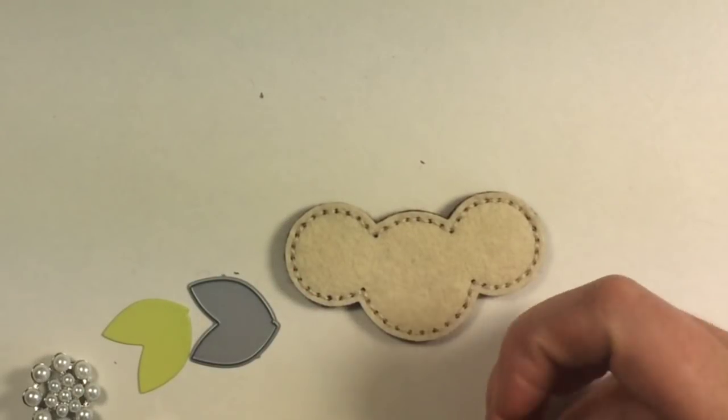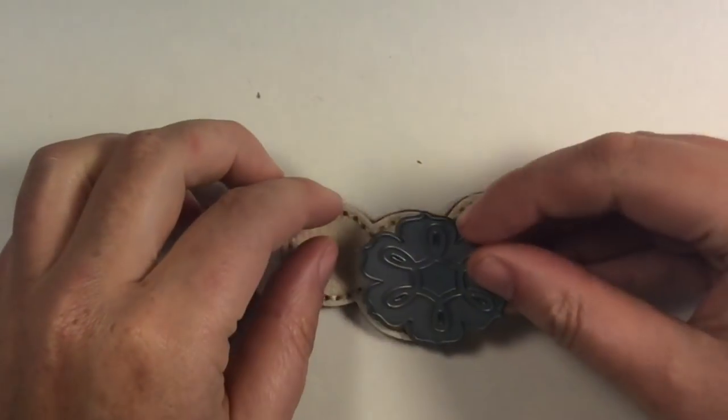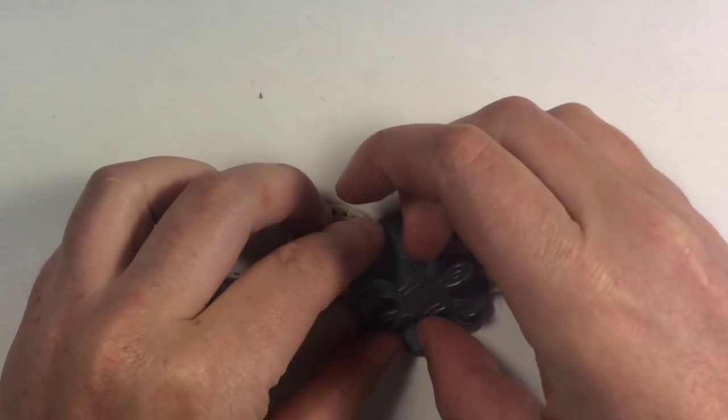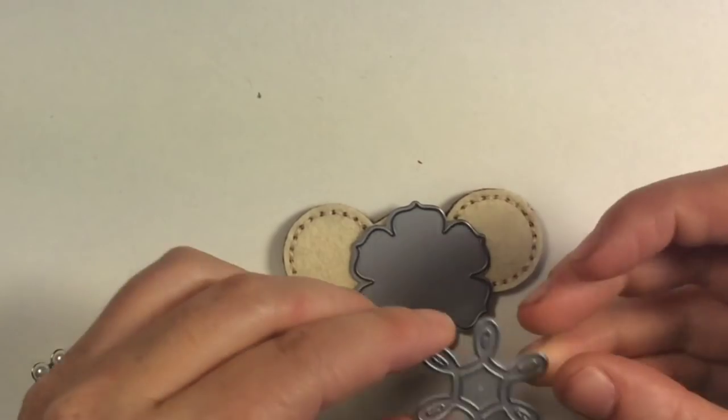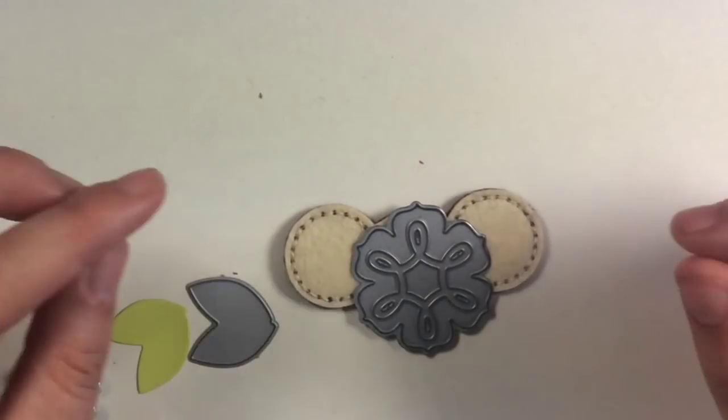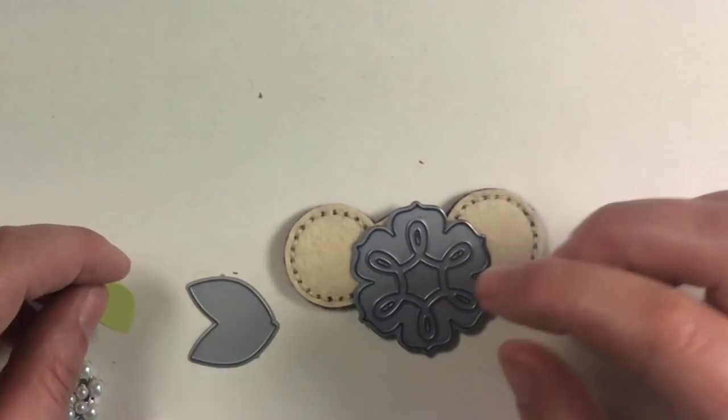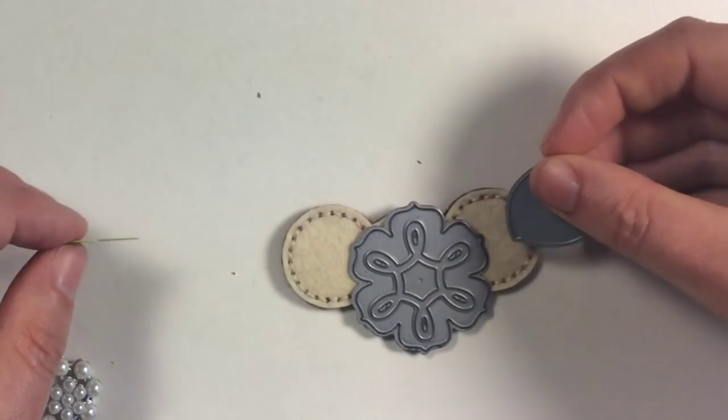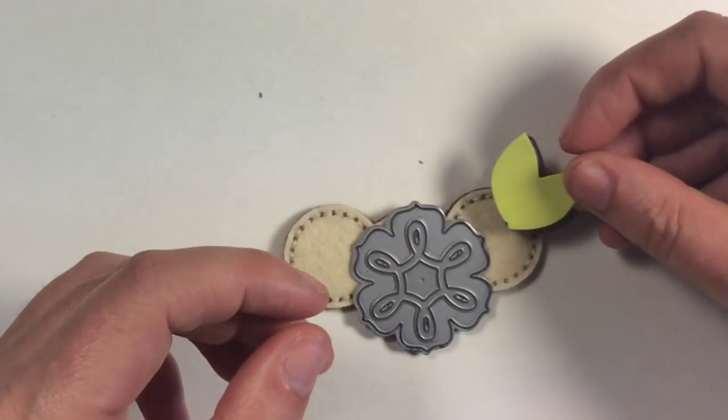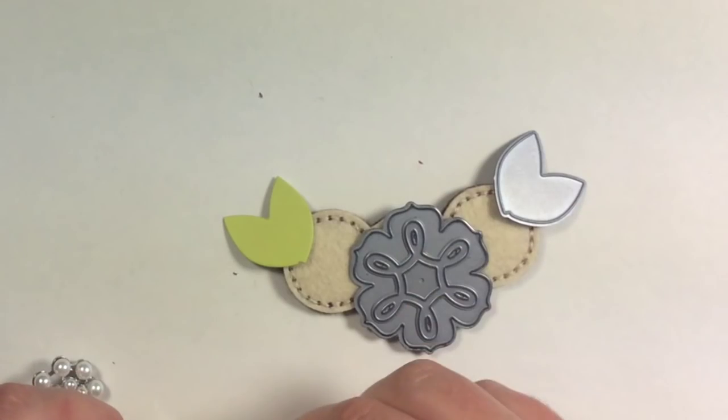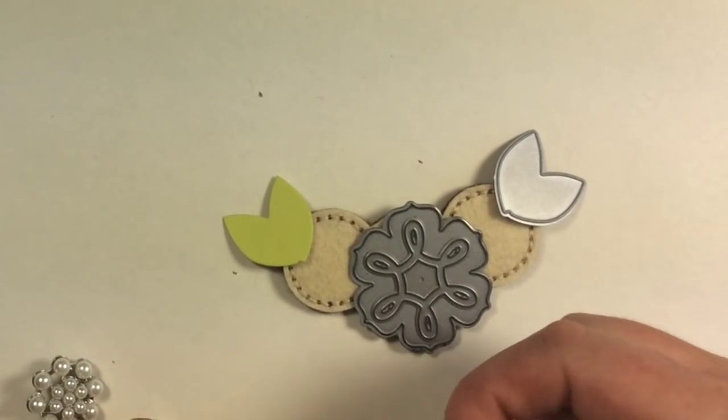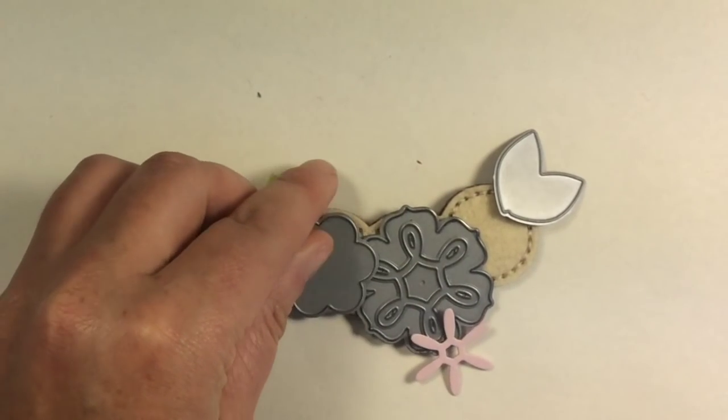We already made our necklace base and what I recommend here is to plan out how you want your necklace to look. Use your dies, use paper cutouts, stack things for size on your necklace base and this will give you an idea and a plan for when you're cutting out your felt.